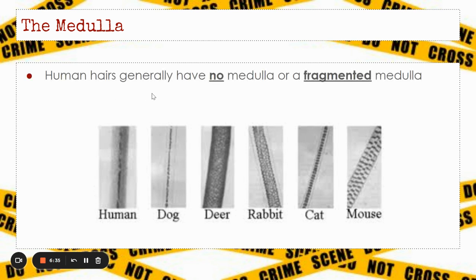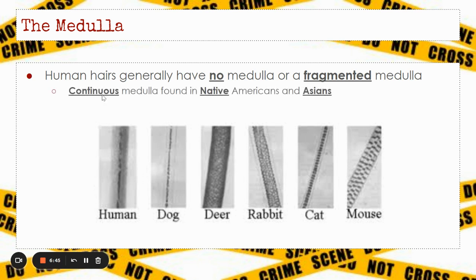Human hairs generally will have no medulla or they will have a fragmented medulla — it has breaks, but they're at uneven intervals. If it has a continuous medulla, that could be from a Native American or an Asian individual, because they tend to sometimes have continuous medullas because their hair is so dark.